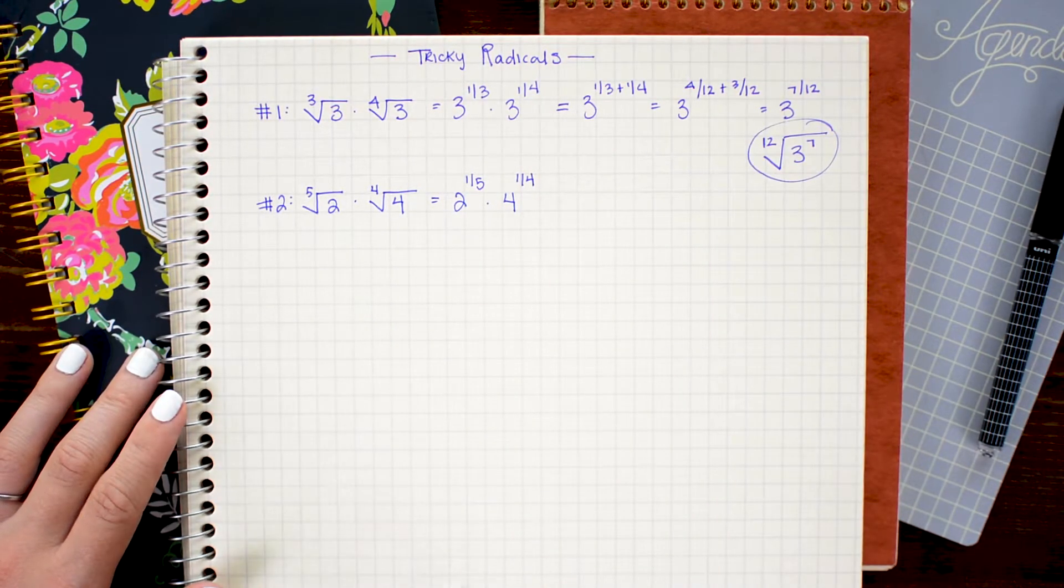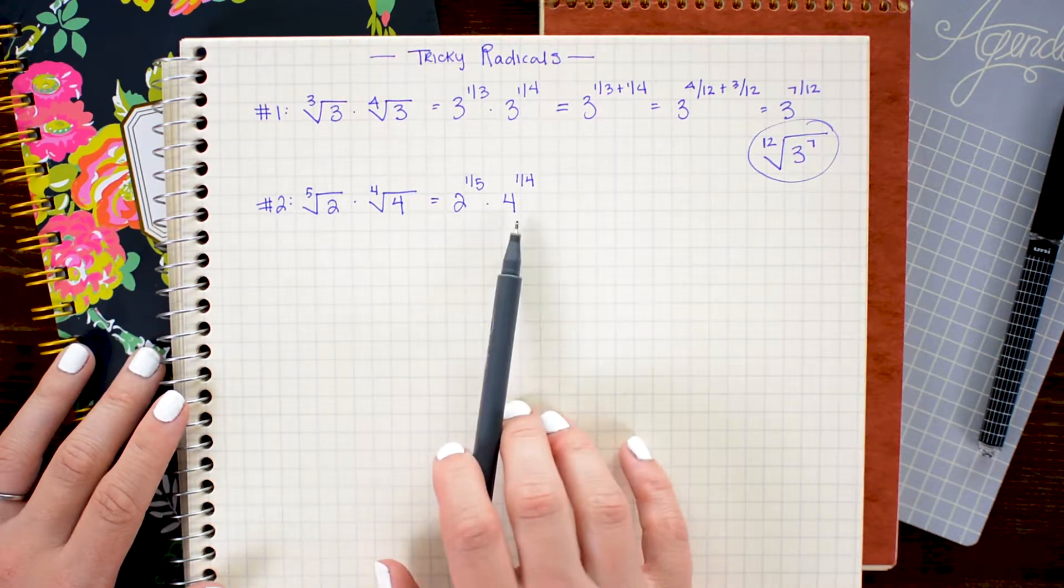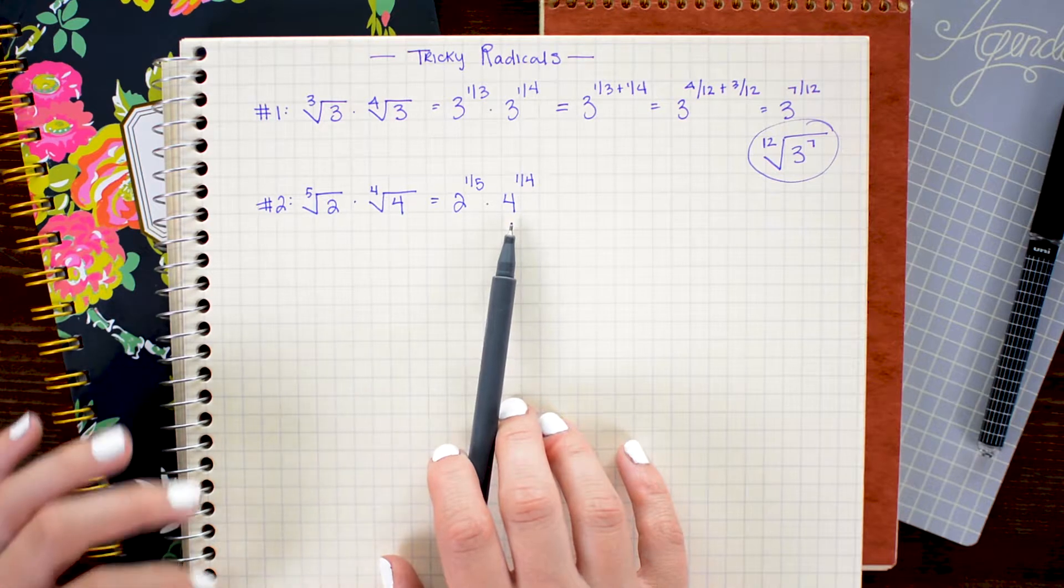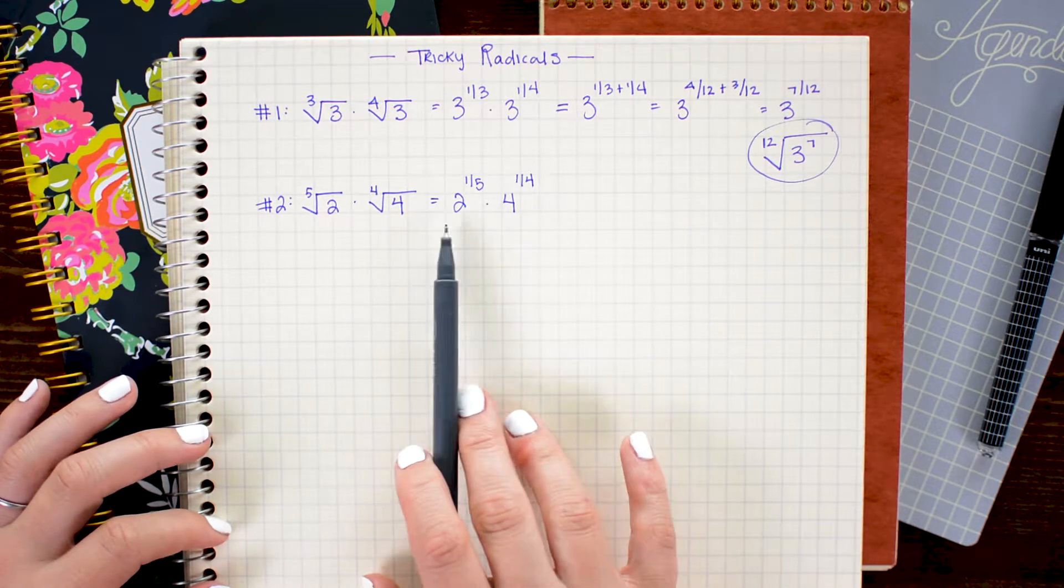And here's where the trick comes in. I can go ahead and write 4 as 2 squared and by doing that I have managed to make a base of 2 on both of these.